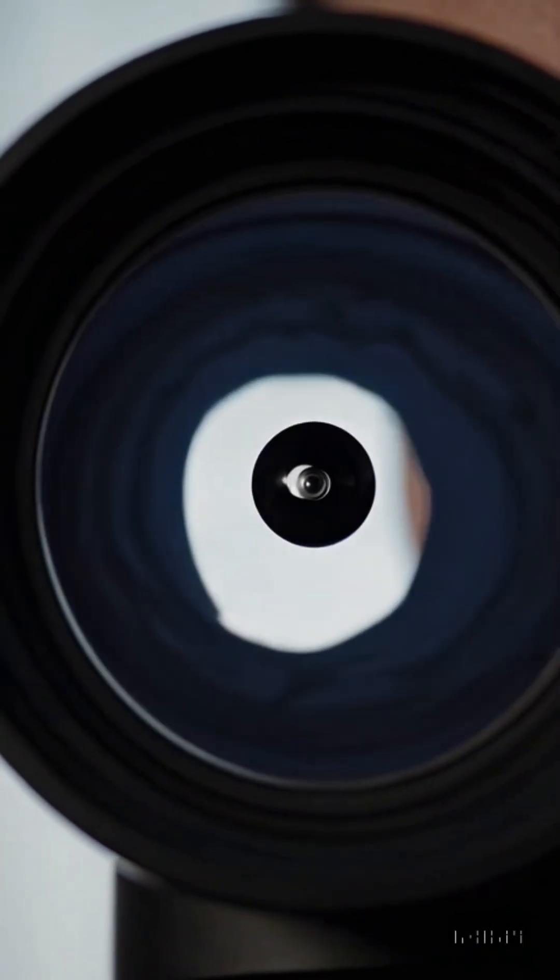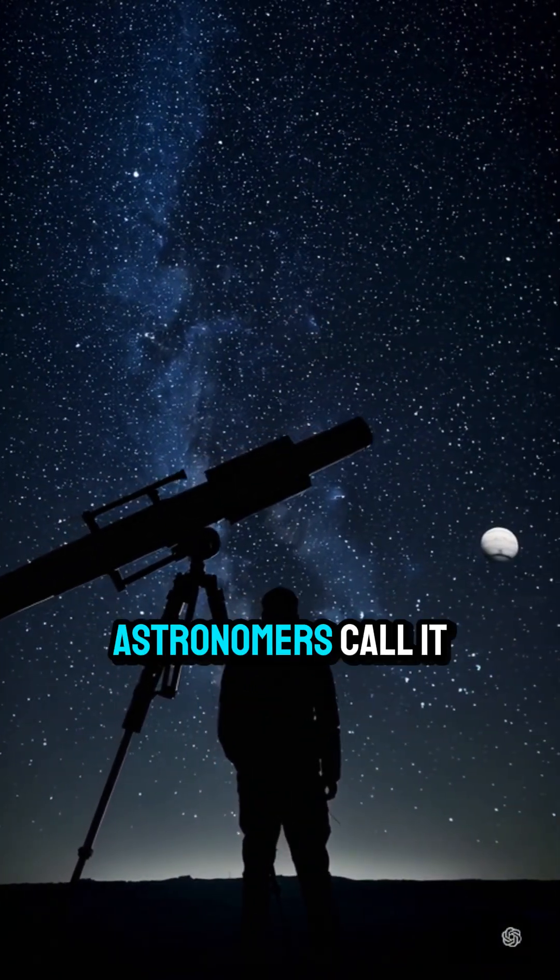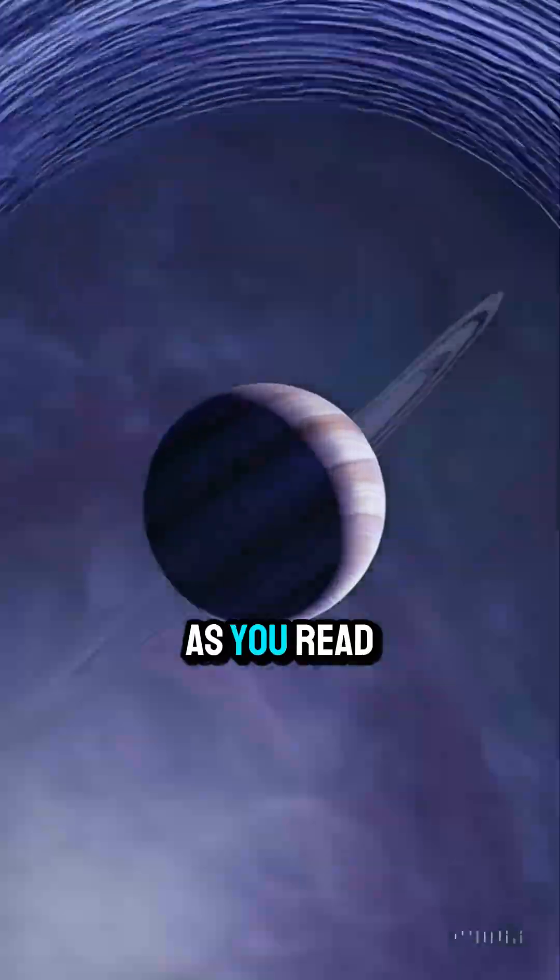But here's the twist. The rings are dying. Each year, their particles fall into Saturn's atmosphere, pulled down by gravity like cosmic rain. Astronomers call it ring rain, and it's happening right now as you read this.